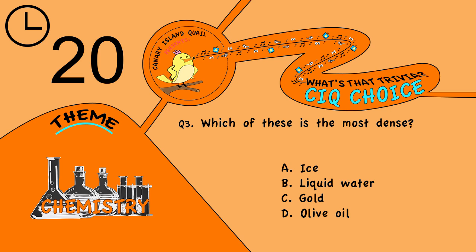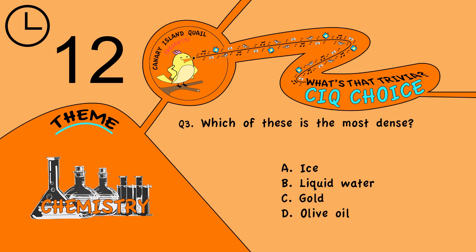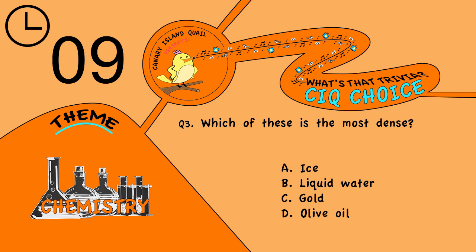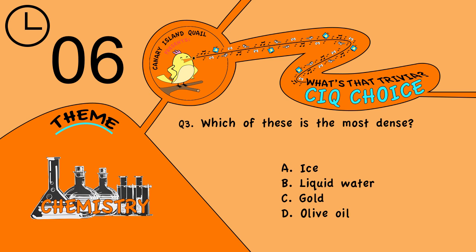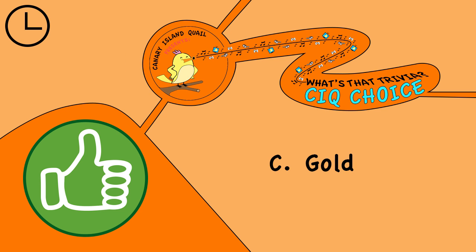Question 3. Which of these is the most dense? Is it A, ice; B, liquid water; C, gold; or D, olive oil? The answer is C, gold.